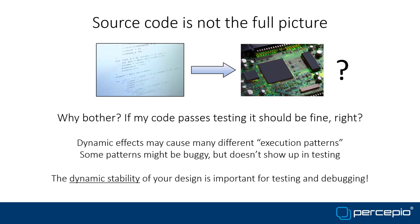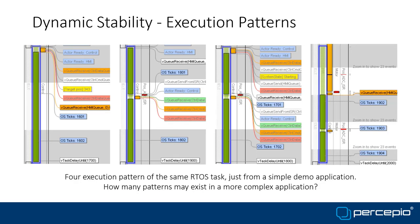The dynamic stability of your software design is really important for testing and debugging. Here is an example from our Tracealyzer tool showing four different execution patterns — the same task in FreeRTOS with different timing and event orders. This is from a very simple toy application and I found four patterns in just a few minutes. Imagine how many could exist in a more complex, realistic application.